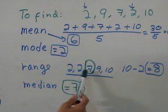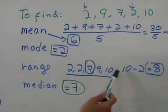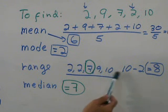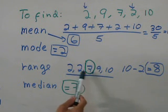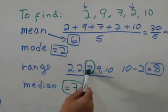Range, you order the set of data and you subtract the biggest minus the smallest. And the median is when you order the set of data, the number in the middle.